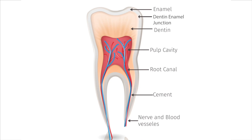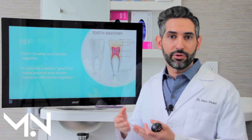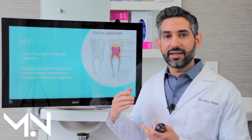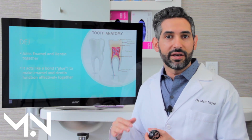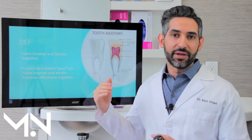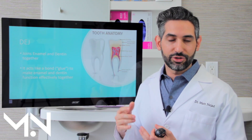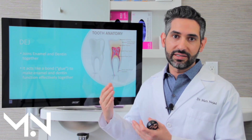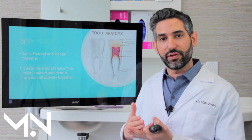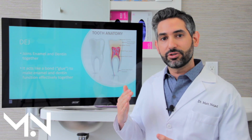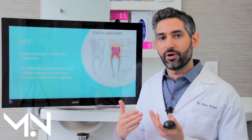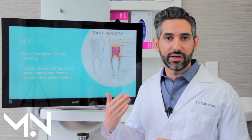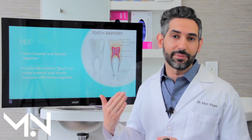The DEJ is like a bond or a glue that holds the enamel and dentin together. If this bond were not as strong as it is, it wouldn't be such a good system. But in reality, it's such a strong bond that together the enamel and dentin benefit from each other's presence. Dentin is more flexible but also softer, which means if your tooth was made of all dentin, as you eat and chew and grind, it would wear away very fast. And we see that all the time in dentistry.